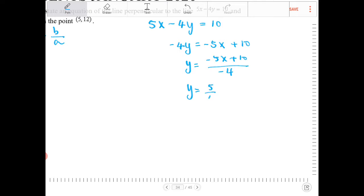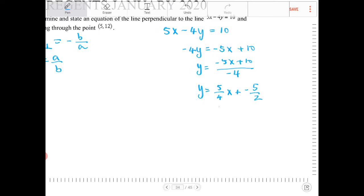So this becomes 5 fourths x plus, or actually it will be minus now, so it will be plus negative 10 fourths or 5 halves. But I really don't care about what the y-intercept is of this line. All I care about is this guy right here. The slope is 5 fourths.